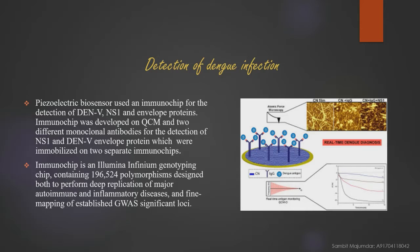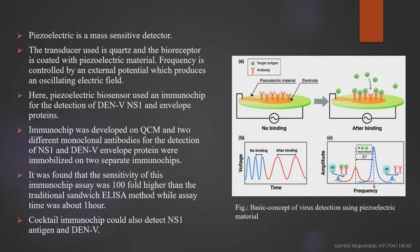Let's discuss how dengue infection can be detected using a piezoelectric biosensor. The piezoelectric biosensor uses an immunochip for the detection of DEN5 and NS1 and envelope protein. The immunochip was developed on QCM with two different monoclonal antibodies for the detection of NS1 and DEN5 envelope protein, which were immobilized on separate immunochips. Piezoelectric is a mass-sensitive detector. The transducer used is quartz and the bioreceptor is coated with piezoelectric material.